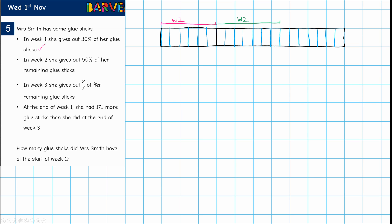That is what she gave out in week two and then in week three she gives out two sevenths of her remaining glue sticks. Now hopefully they've designed this nicely so that we've got seven parts left. One, two, three, four, five, six, seven indeed. And two sevenths is what she gives away in week three. This is what's remaining.